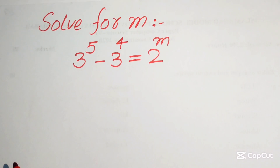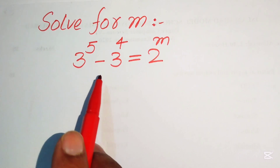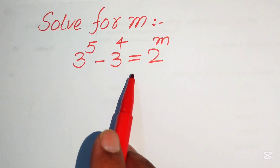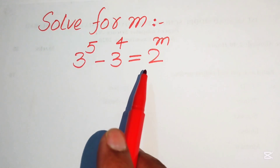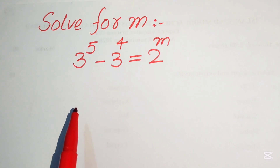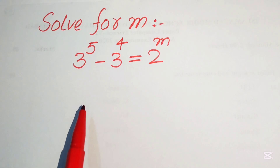Hello everyone, welcome. We are going to solve this Math Olympiad algebra problem: 3 to the power of 5 minus 3 to the power of 4 equals 2 to the power of m. We need to solve this for the value of m. The very first step is to focus on the left-hand side.